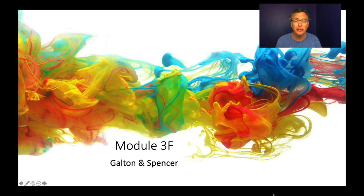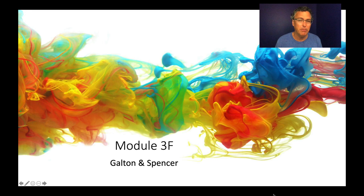Alright, the sixth and last lecture for module three, taking us to the end of chapter four. We're going to talk about two figures: Francis Galton and Spencer. We're right around the late 1800s and early 1900s — the time when psychology is being born over in Germany, by a guy named Wilhelm Wundt, who we'll talk about at the beginning of the next module.